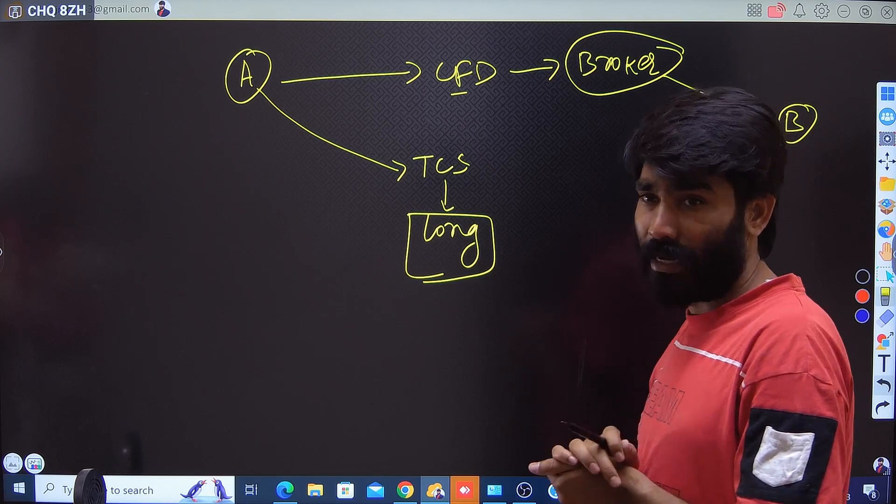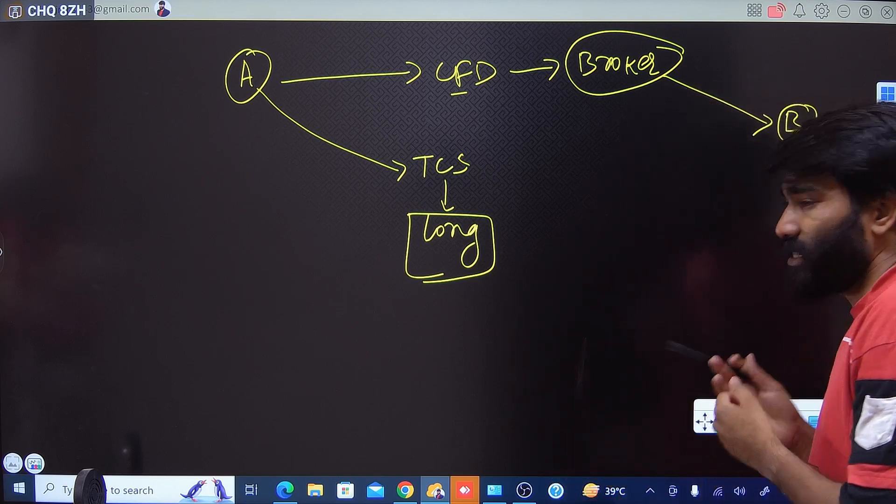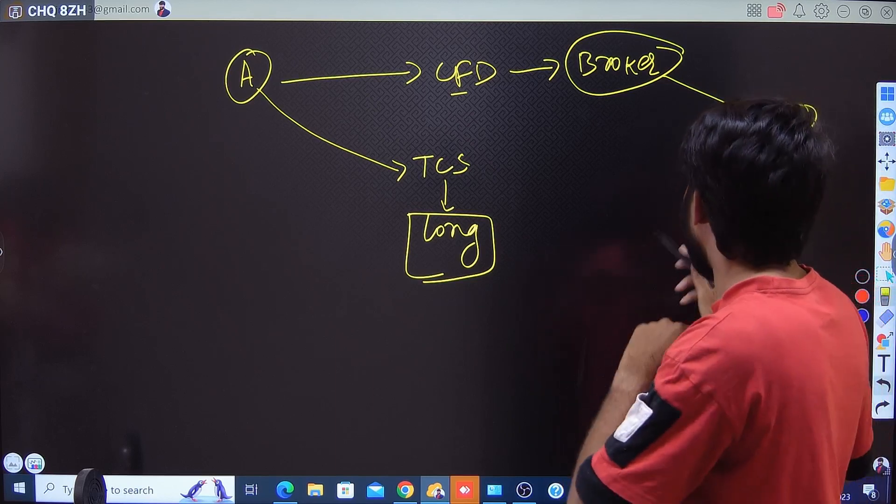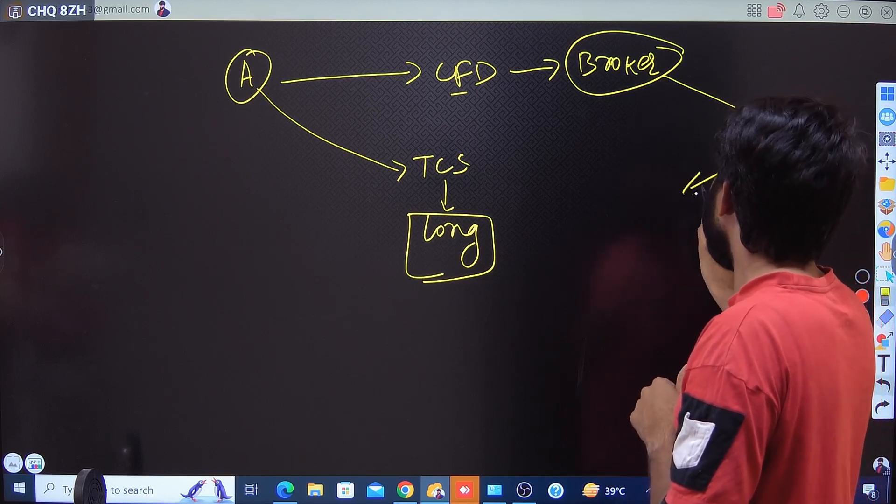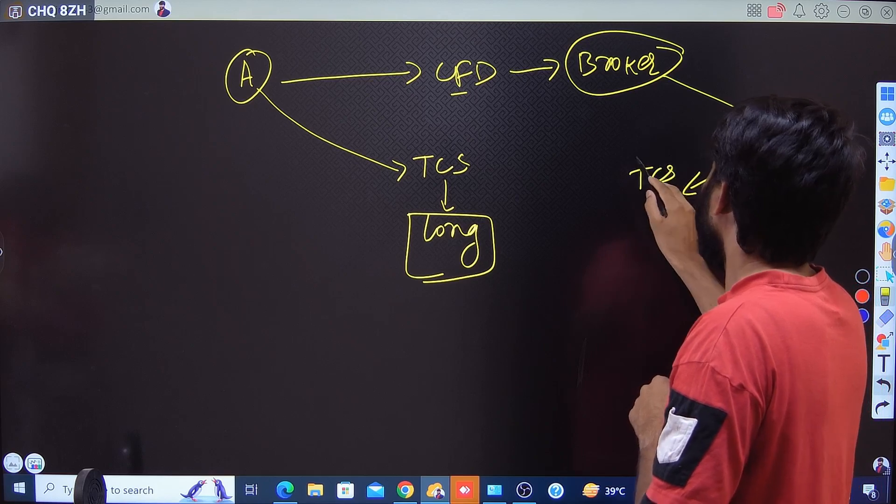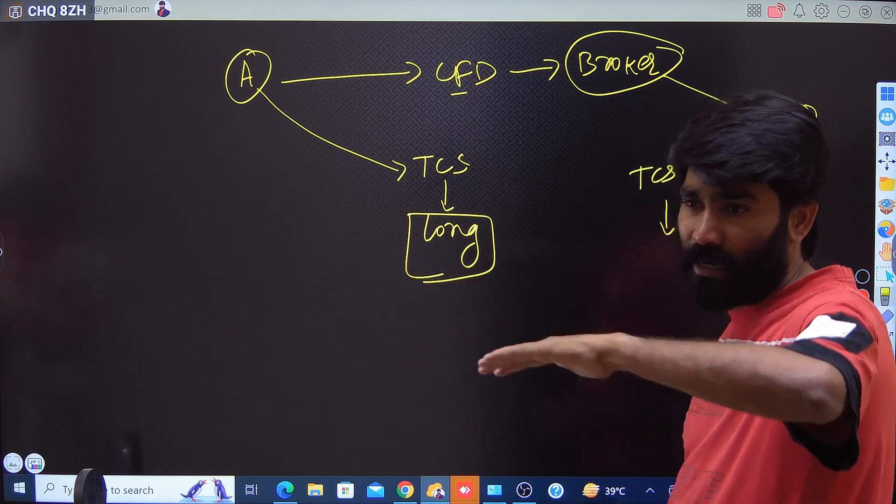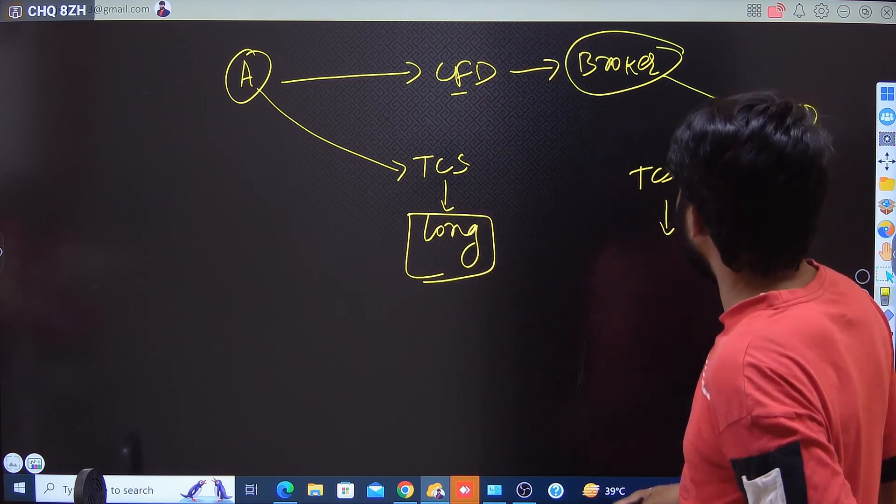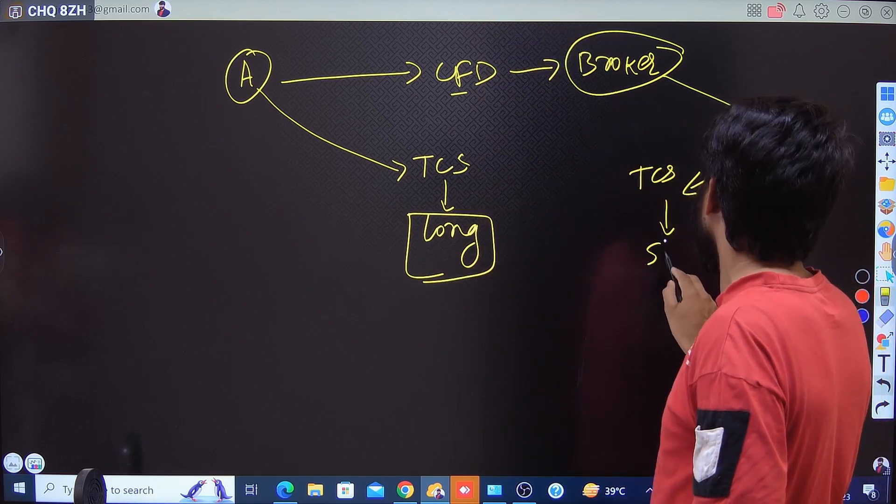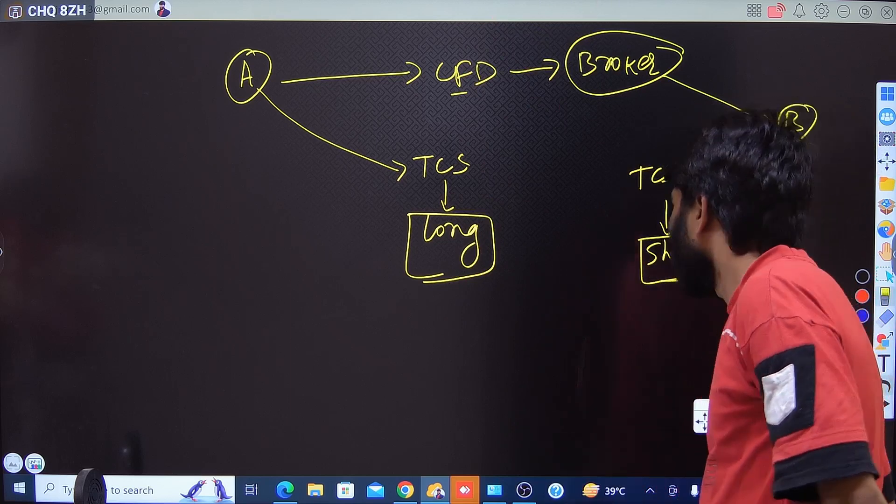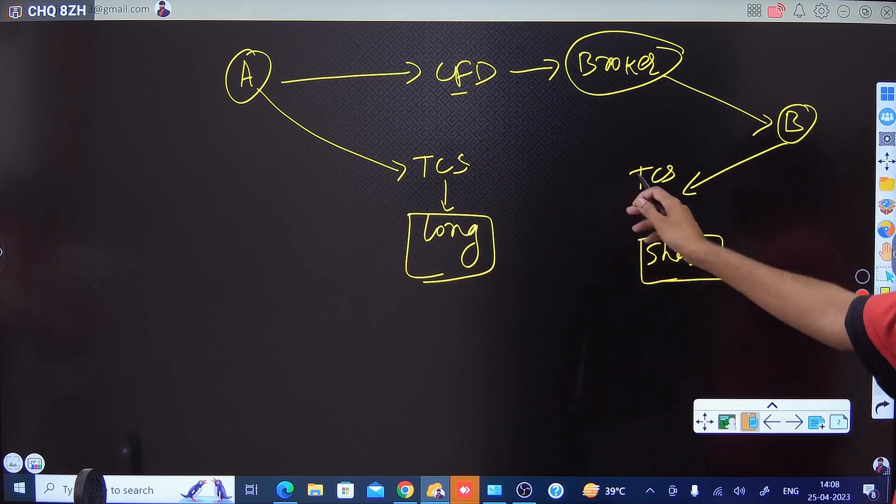Then definitely there would be another party. The broker will reach out to party B to see if party B has a plan to enter into CFD contracts. If party B also enters into the same TCS security, this party might be bearish. If one party is bullish on long position, then there would be another party which would be bearish on the same security.